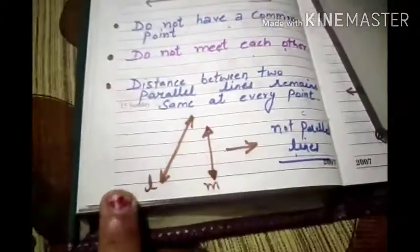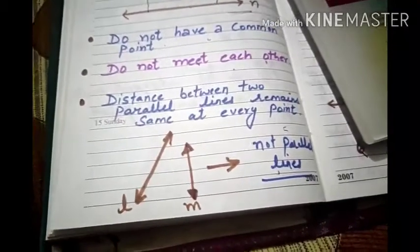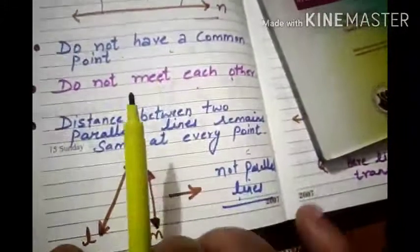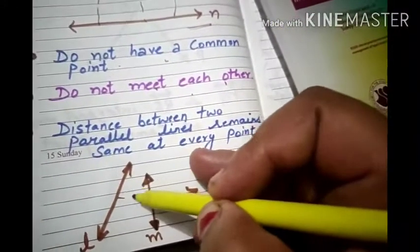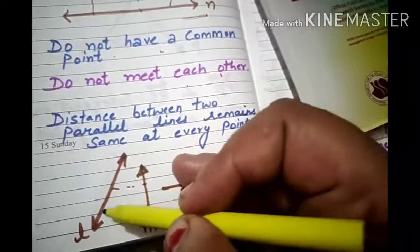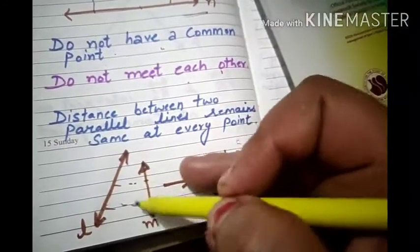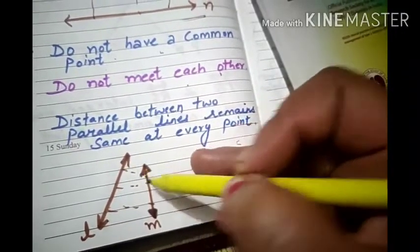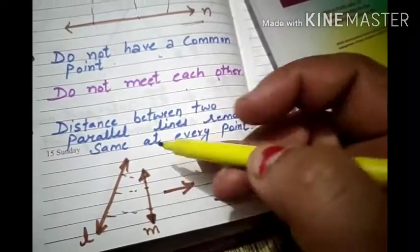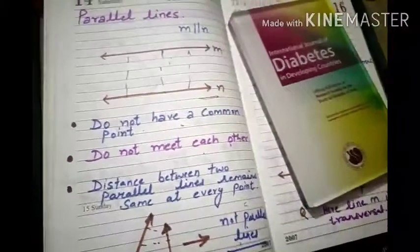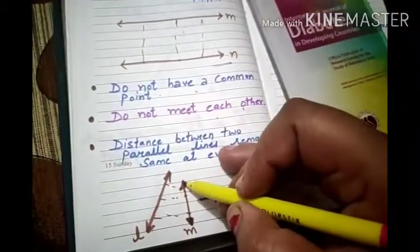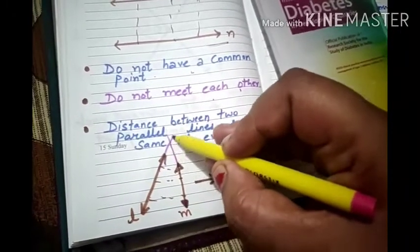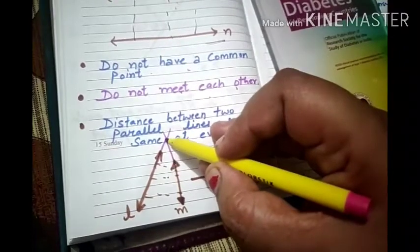Now I have drawn two more lines, line L and line N. But these two lines are not parallel lines. Why? Because if you look at the distance, the distance is not the same — it has more distance on one side but less gap on the other. And when I extend these lines, they will meet each other.